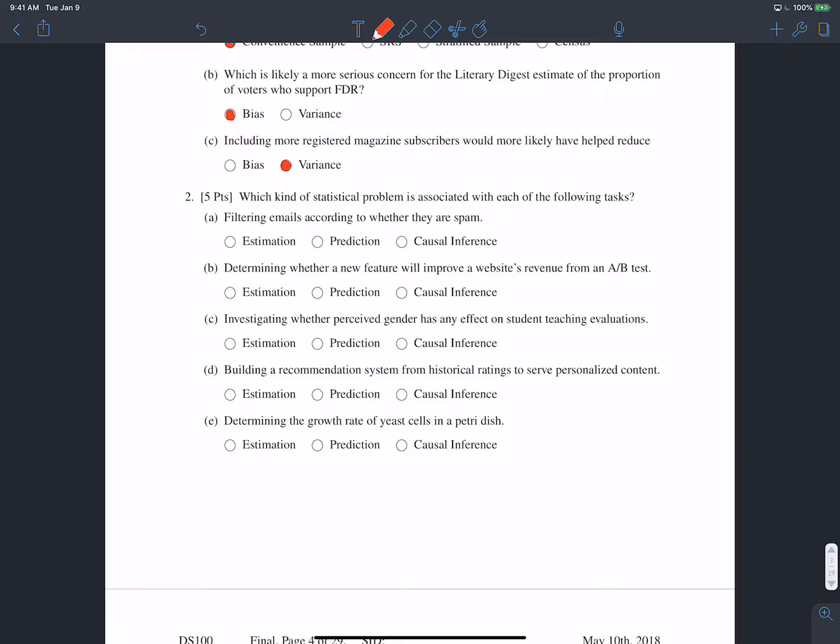Prediction is what we spent a lot of the time in this course talking about. It's when we do things like regression and classification. We're given some training data, train some model on it and we want to use it to predict the value, whether it's some label or some continuous real number of some new test point. That's the problem of filtering emails according to whether or not they're spam or ham. We're given some data set of emails and whether or not they're spam, and we train a model on that and use it to predict whether or not new unseen emails are spam or ham.